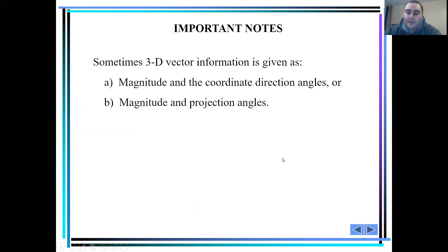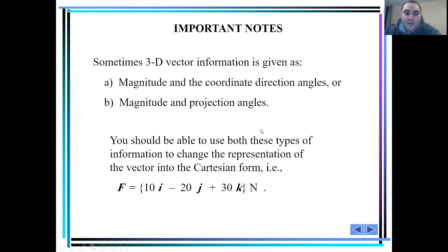Now, here's some important notes I want you to carefully consider. Sometimes 3D vector information is given as magnitude and the coordinate direction angles or the magnitude and projection angles. You should be able to use both these types of information to change the representation from the vector form to the Cartesian form, Cartesian form being the i, j, k convention.